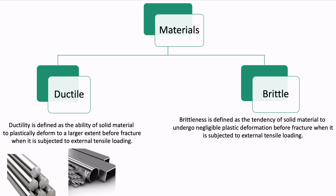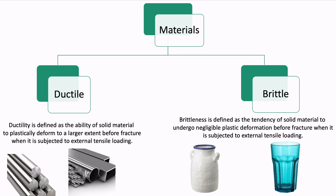Steel and aluminum are good examples of ductile materials. Similarly, ceramic and glass are materials with a high brittle nature. In general, ductile materials can be drawn into sheets or wires, but brittle materials cannot be used for the same purpose.